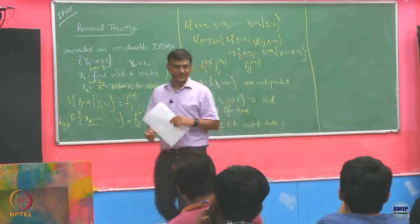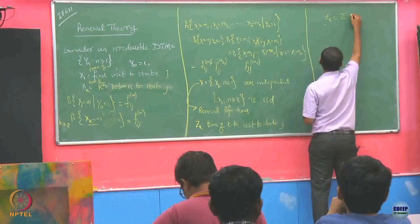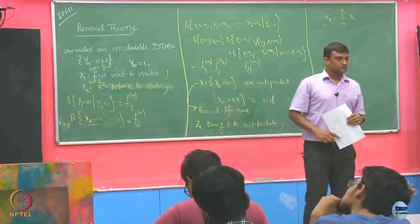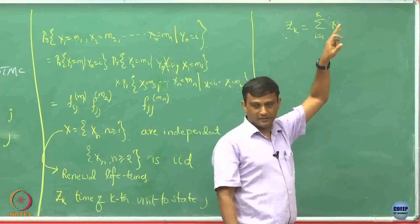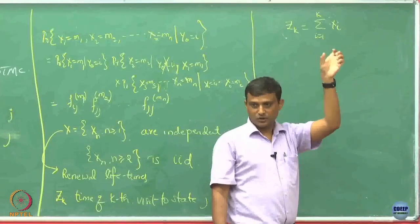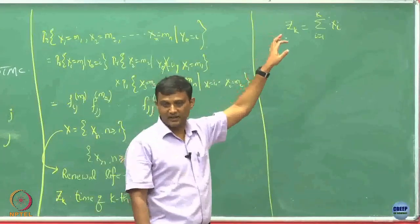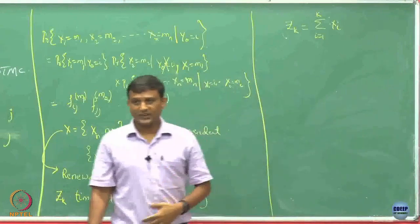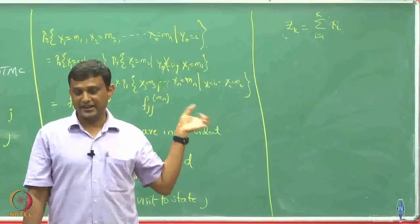There is a relation between Z_k and X_k: Z_k equals the sum of X_i for i from 1 to k. X1 denotes the time the battery first died, X2 is the next time you replace the battery, and if you just add all of them, you get Z_k — the time when you replace your battery for the kth time.